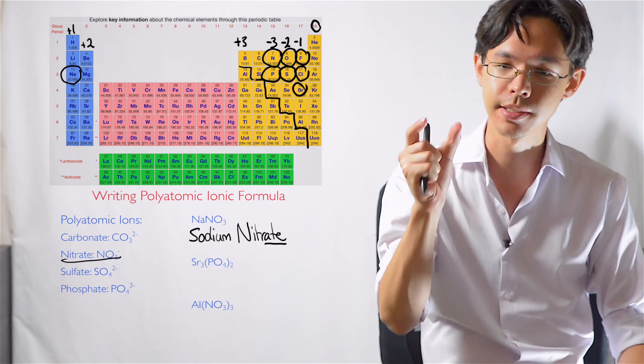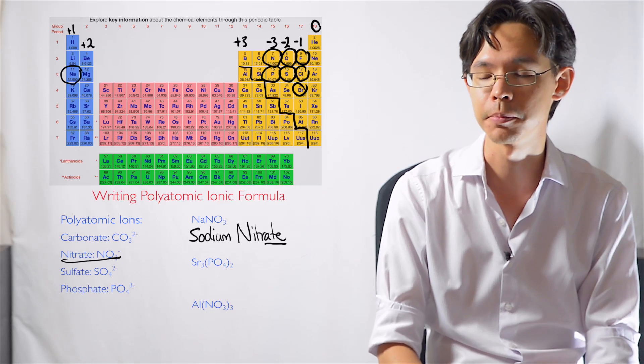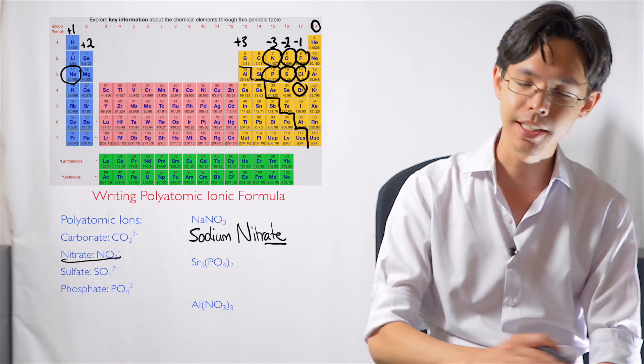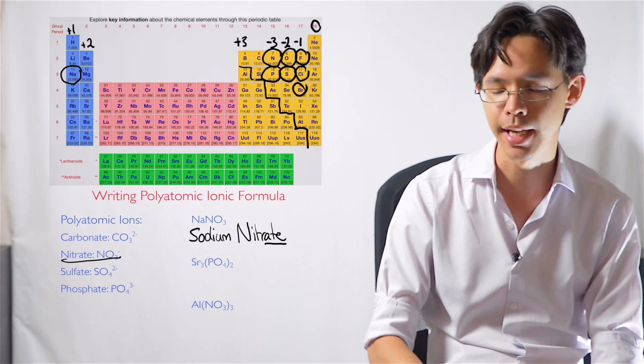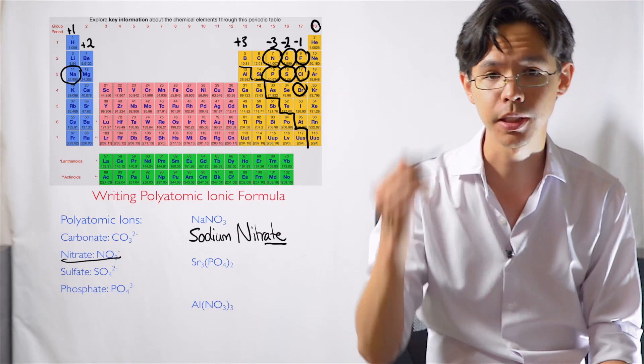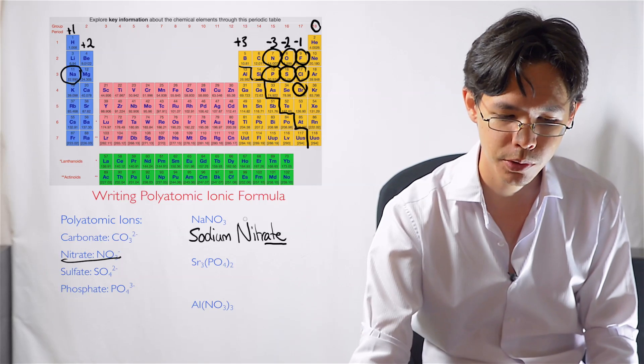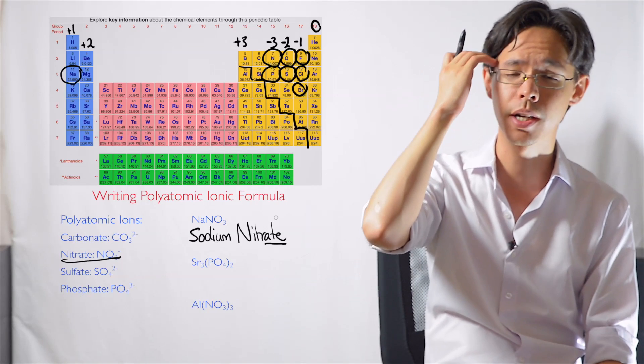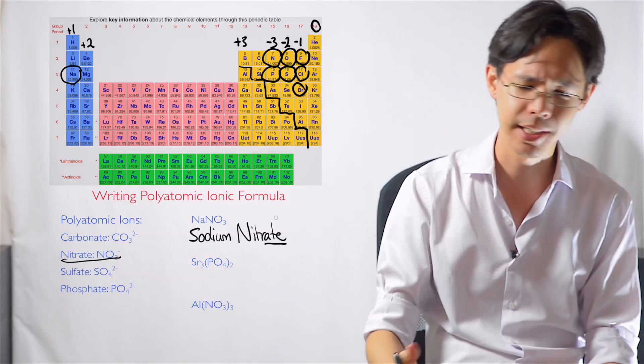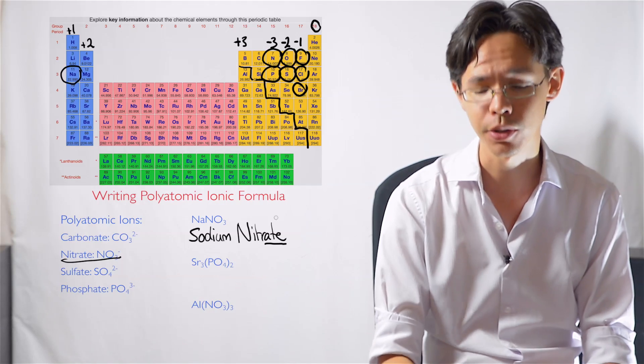If it's got anything else, so -ite, -ate, that tells you it must be a polyatomic ion. So keep that in mind guys because I do see that's a very common error. I see people try and write sodium nitride when they should be writing nitrate and it's a really unfortunate thing because they got a little bit confused. So keep that in mind guys.